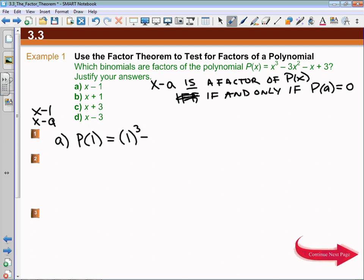So that's 1 cubed minus 3 times 1 squared minus 1 plus 3. That works out to 1 minus 3 minus 1 plus 3. The negative 1 and positive 1 cancel, negative 3 and positive 3 cancel, and we get 0. So yes, it is a factor.